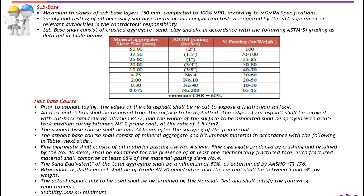HALT base courses — there are a number of checkpoints which will be discussed. Number one: before asphalt laying, the edges of old asphalt shall be recut to expose a fresh clean surface. Number two: all dust and debris shall be removed from the surface to be asphalted. The edges of cut asphalt shall be sprayed with cut-back rapid curing bitumen or RC2, and the whole surface shall be sprayed with cut-back medium curing bitumen, also known as MC2 prime coat, at the rate of 1.5 liters per meter square.